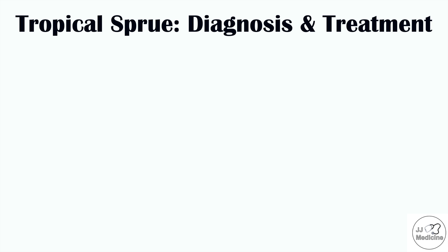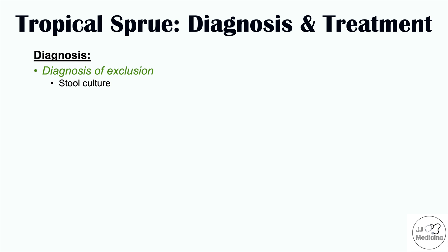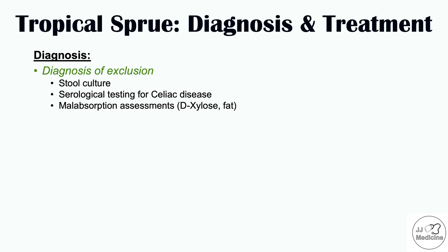Clinicians diagnose tropical sprue by excluding other possible causes of the symptoms — this is a diagnosis of exclusion. First it's important to perform a stool culture looking at other potential causes of acute and chronic diarrhea, including Giardia lamblia and other organisms. Serological testing for celiac disease is also important. Other assessments look at malabsorption — how well a patient absorbs D-xylose, and stool fat content.